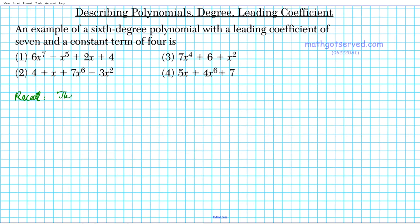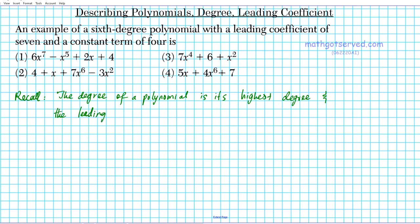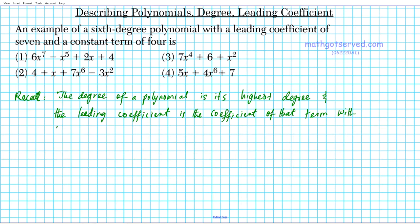The degree of a polynomial is its highest degree. The term with the highest degree also helps you find what the leading coefficient is. The leading coefficient is the coefficient of that term with the highest degree.